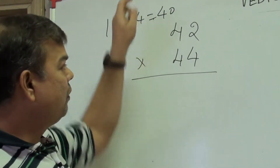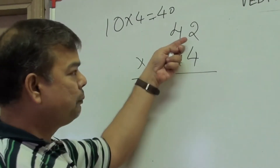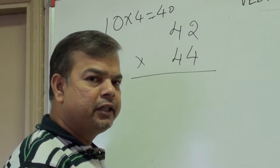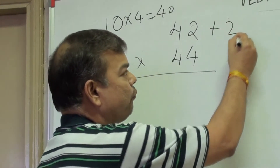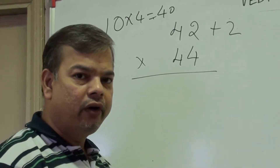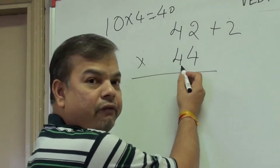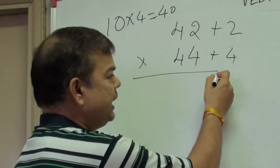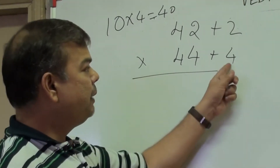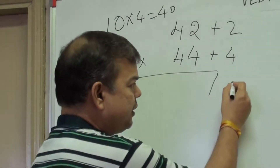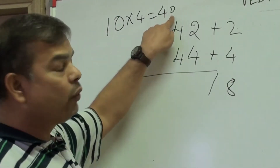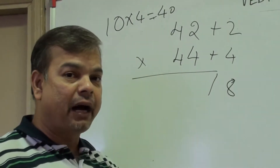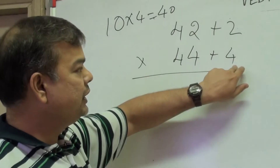Using the same technique, with base 40: subtract 40 from 42 to get +2, and subtract 40 from 44 to get +4. Now multiply these two differences: 2 × 4 = 8. Since 40 has only one zero, only one digit comes here. The second part is the cross addition.